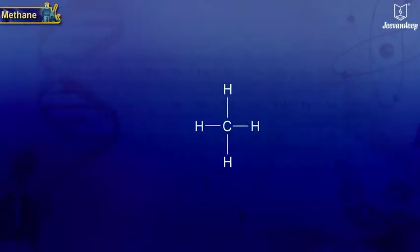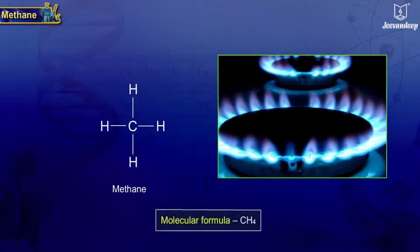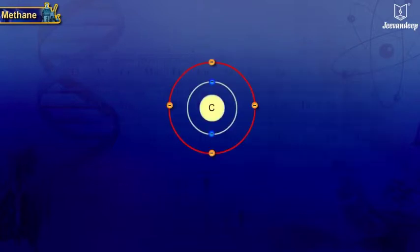Let us see how carbon forms single bonds in methane. Methane, or marsh gas, is the simplest saturated hydrocarbon. It contains one carbon atom. Its molecular formula is CH4. Since carbon is tetravalent, it needs four more electrons to complete its outermost orbit to become stable.